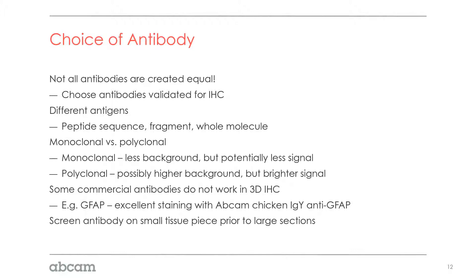Regarding monoclonal versus polyclonal: monoclonal has less background but potentially less signal, while polyclonal may have higher background but a brighter signal. Some commercial antibodies do not work well in 3D at all. For example, with GFAP, you may have no signal from one marker but excellent staining with another, such as Abcam's chicken IgY anti-GFAP antibody. There is a lot of screening required before you can label your entire tissue, and we've worked extensively with Abcam to validate antibodies for 3D cell culture models and one-millimeter mouse brain sections.